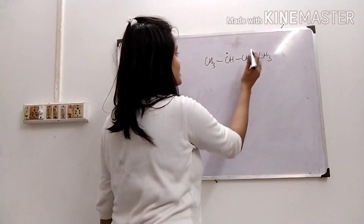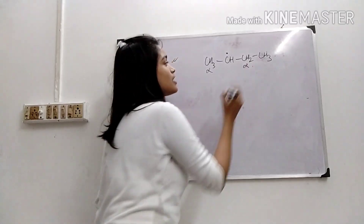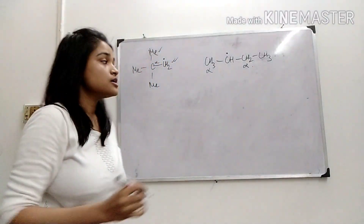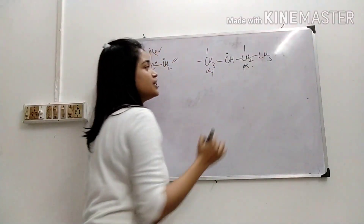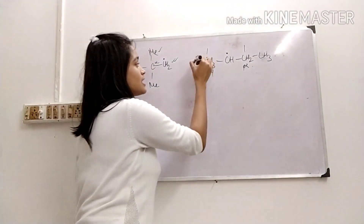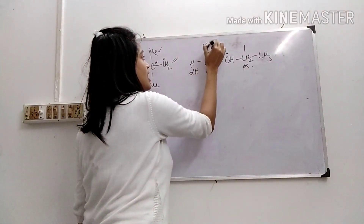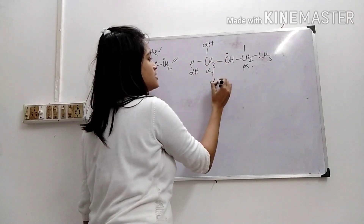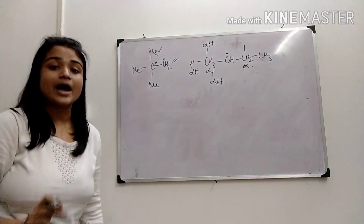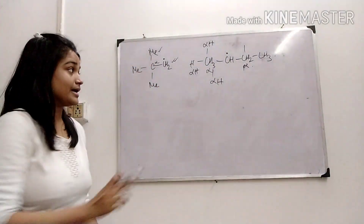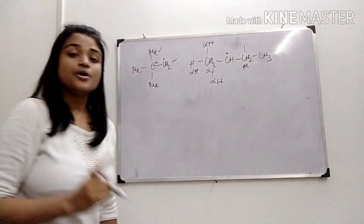But in this case, these two are alpha carbons and both have hydrogen. So these are alpha hydrogens. They can take part in radical hyperconjugation, which will stabilize this radical.